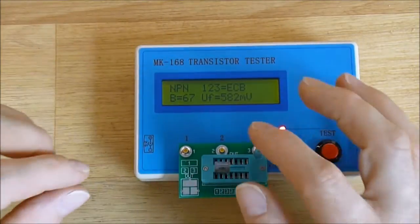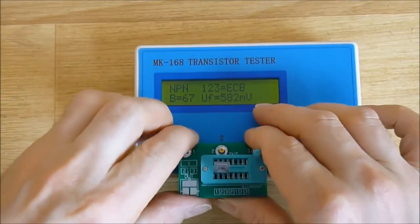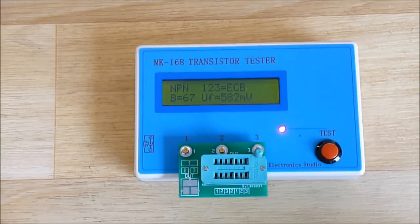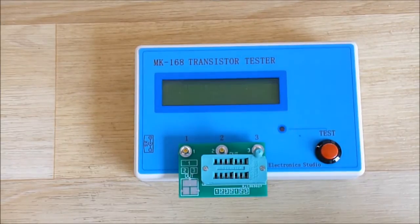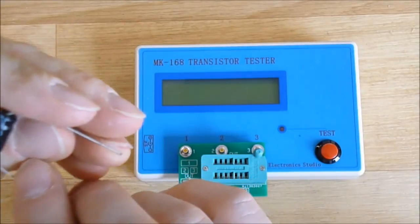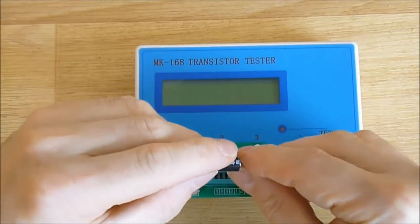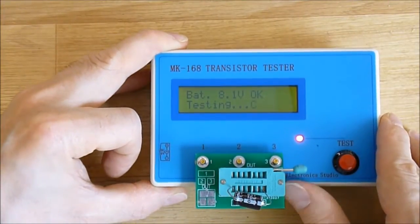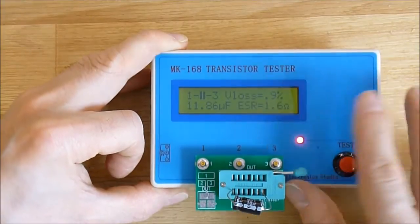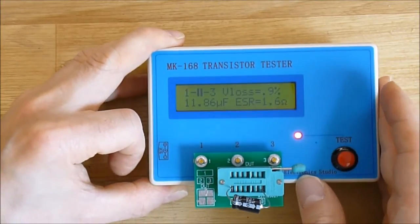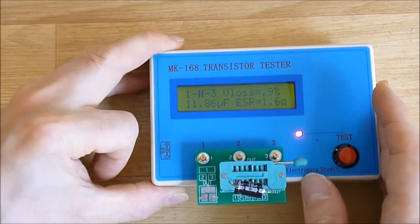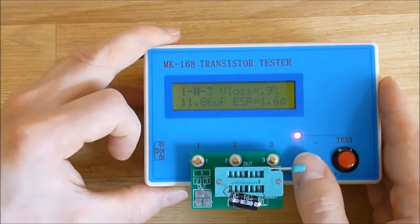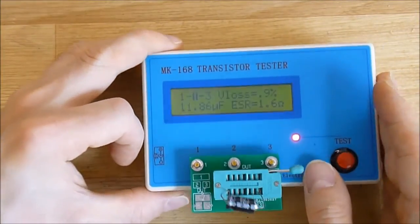One thing I did not show you, it does also measure the ESR of electrolytic capacitors. For example this one, an old electrolytic capacitor, new old stock, it will give me the ESR, 1.6 ohms and the value of course. It's really nice because ESR meters are usually way more expensive than this.